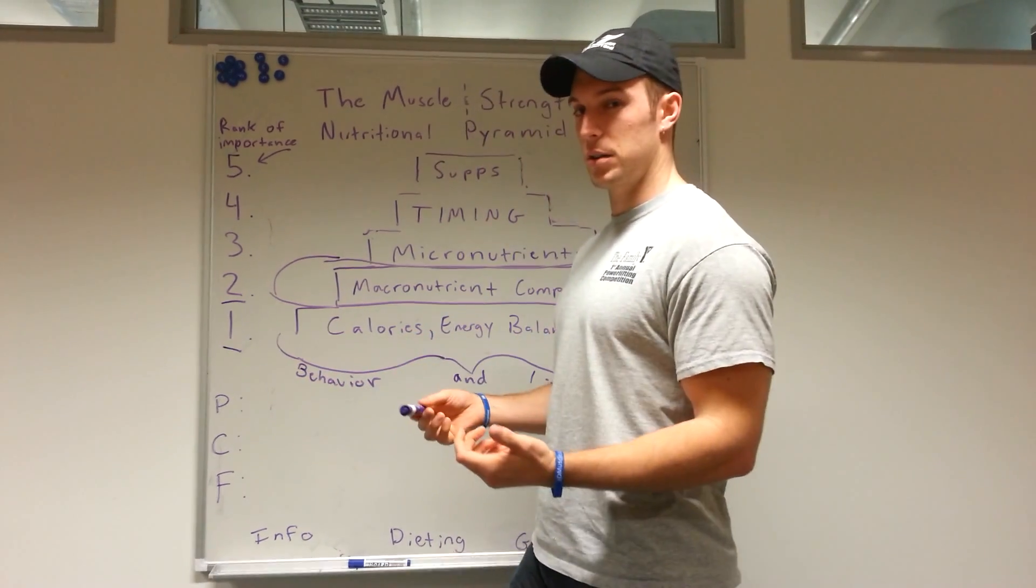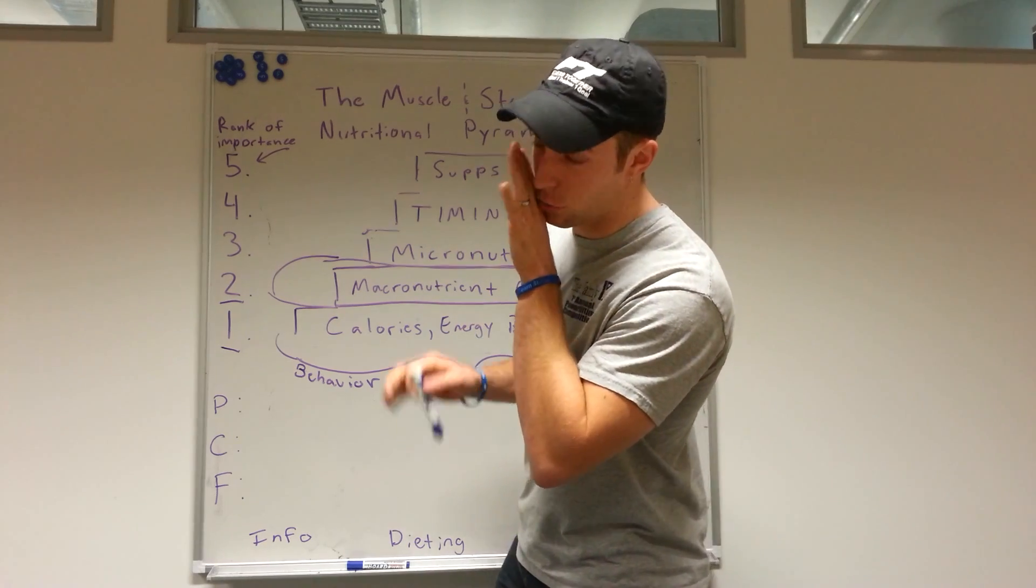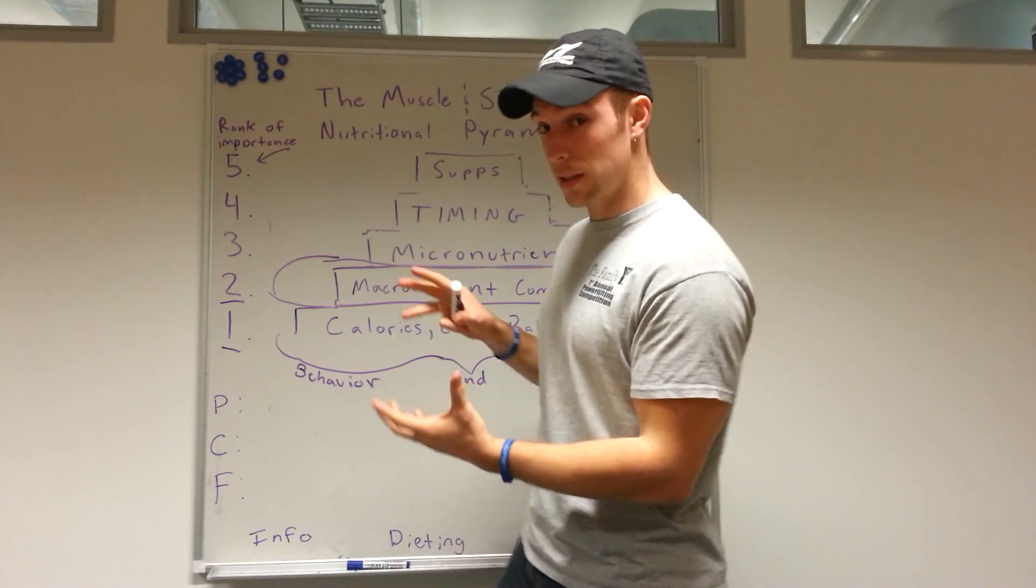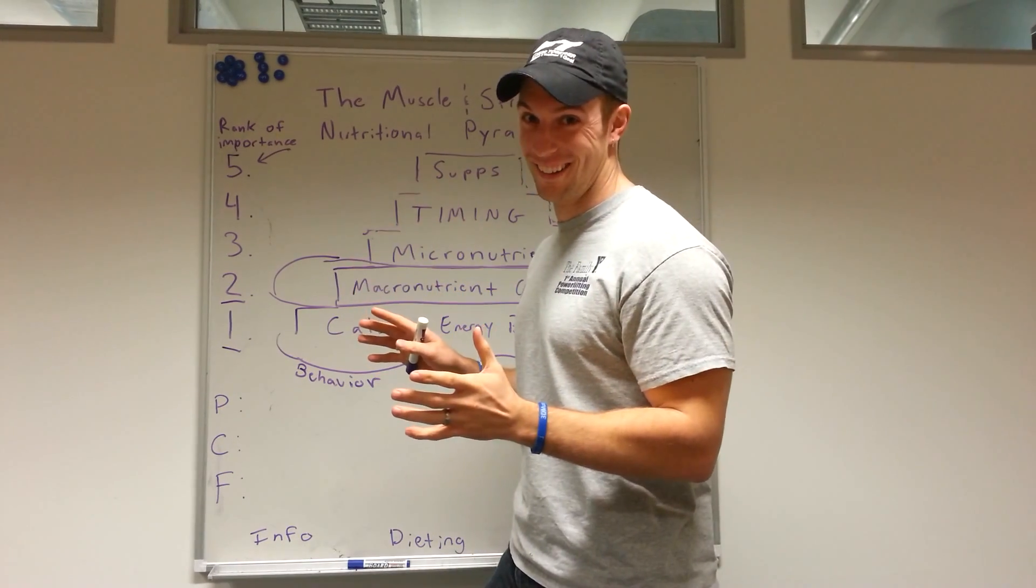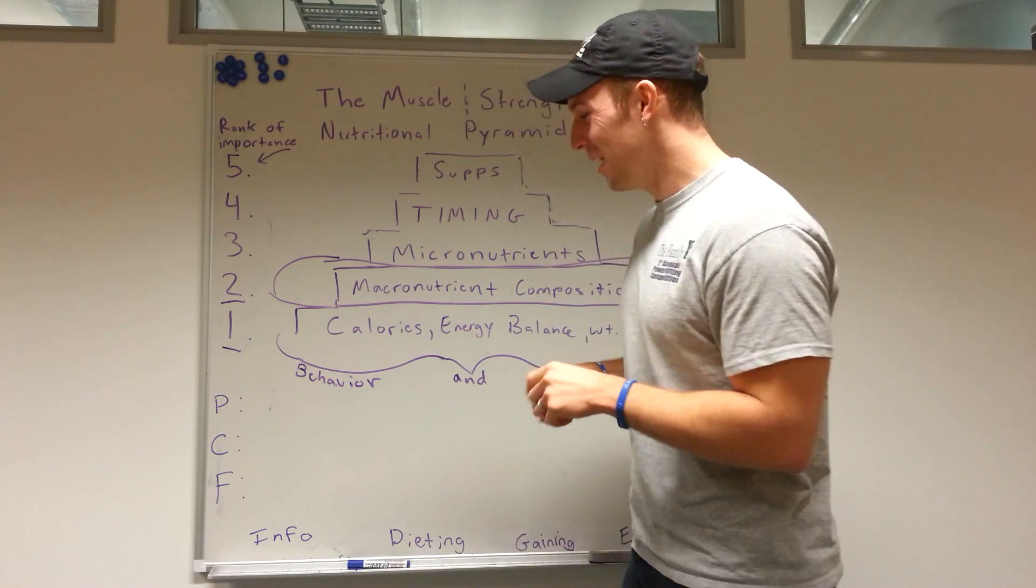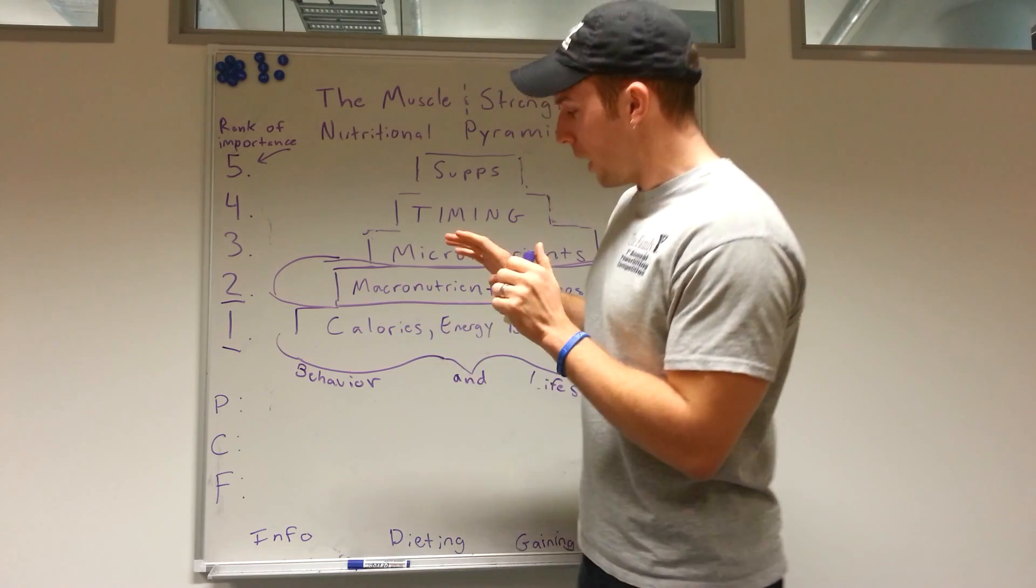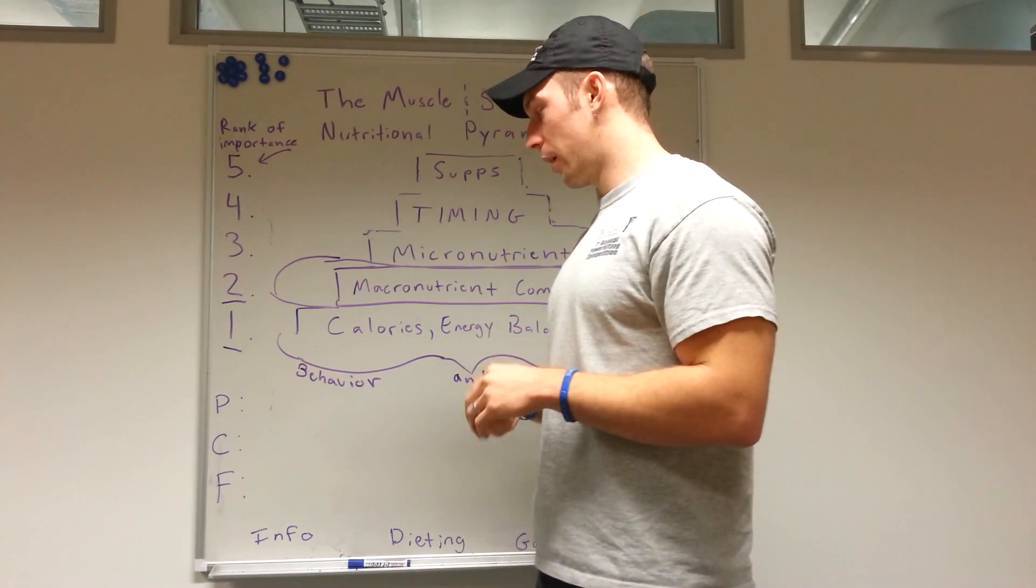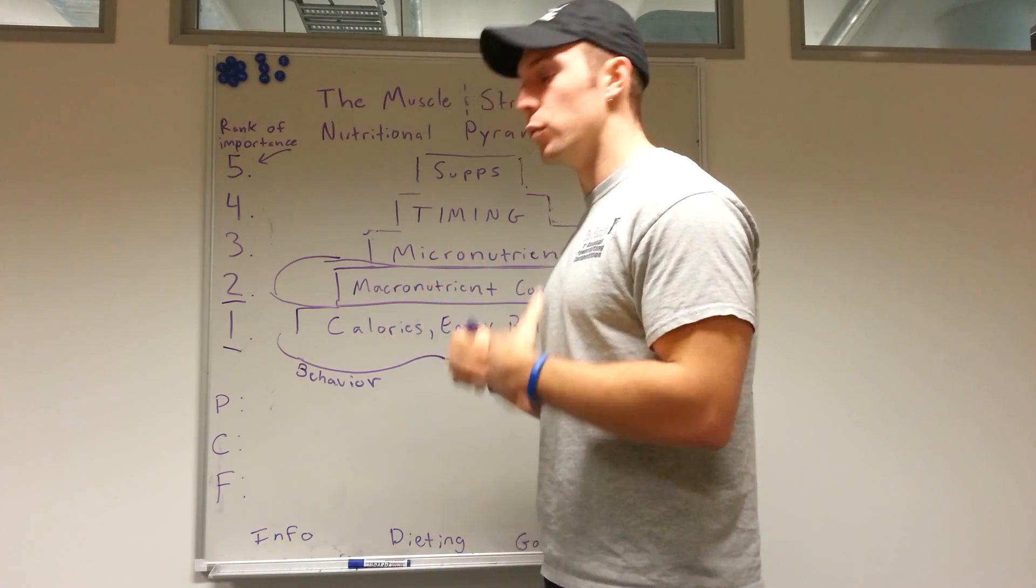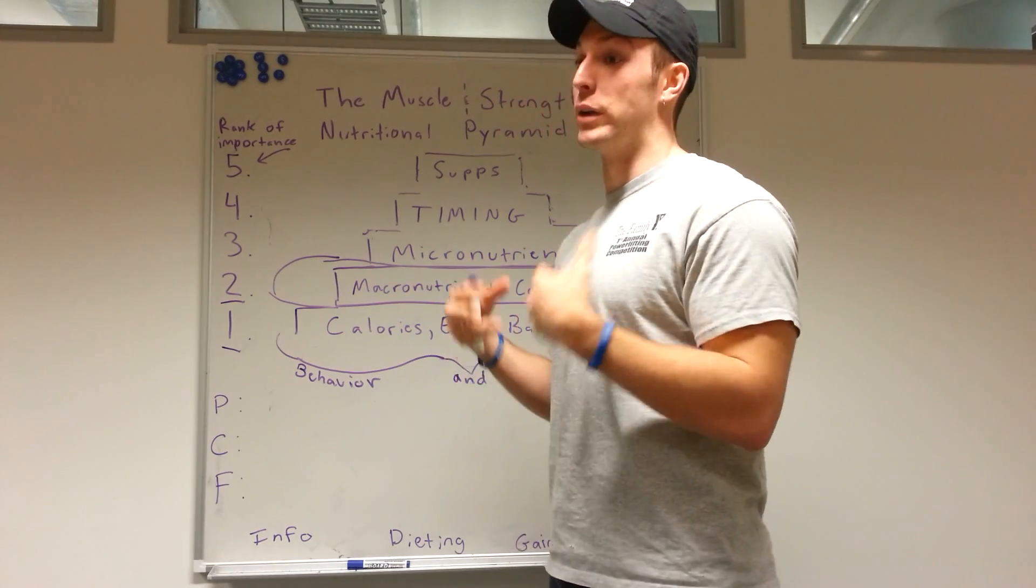So the first step is to know that protein, carbs, and fat are calorie providers, same as alcohol. But we're not going to, for the purposes of this, we're going to assume all of you guys don't drink. For this nutritional pyramid we're going to talk about just where does our contribution on a regular basis come from, hopefully you're not drinking alcohol regularly.